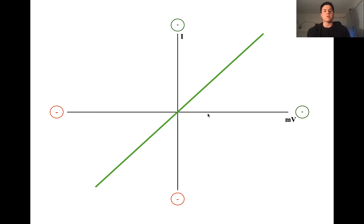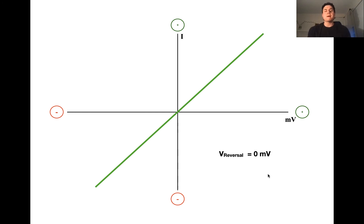One of the more important points on this graph is the reversal potential, which is the point passing through the origin. The reversal potential for any channel is the membrane potential at which the net current through the channel is zero — meaning the current moving out equals the current moving in. The reversal potential for the AMPA receptor is around zero millivolts. When the membrane potential is above zero millivolts, current moves out causing hyperpolarization; when it is below zero millivolts, current moves in causing depolarization.